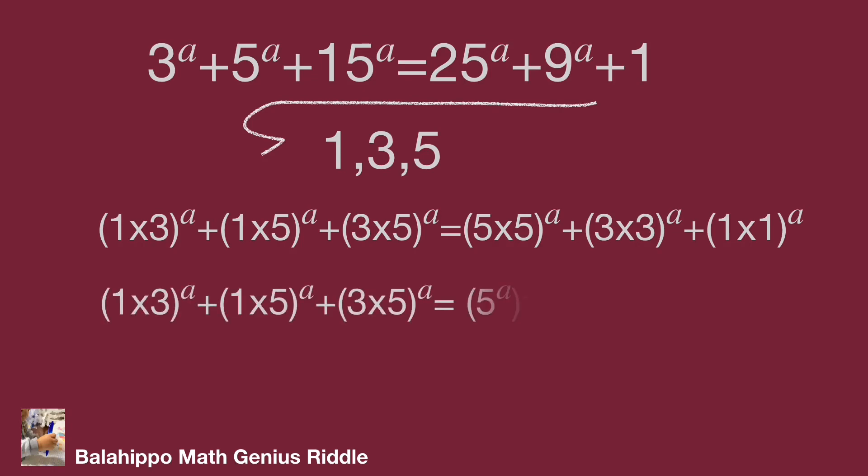Substitute these numbers. We get the new equations. Adjust to quantity 1 times 3 power of a plus 1 times 5 power of a plus quantity 3 times 5 power of a equal to 5 times 5 power of a plus 3 times 3 power of a plus 1 times 1 power of a.